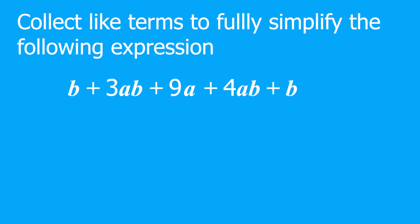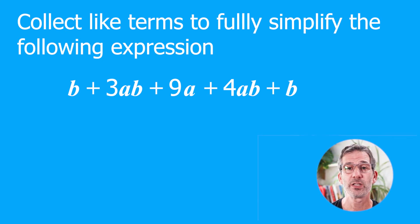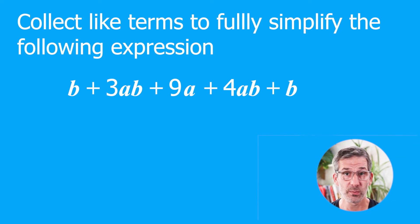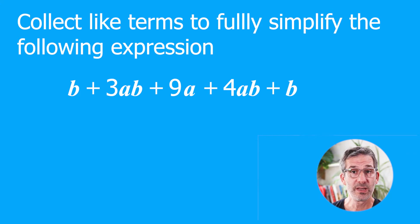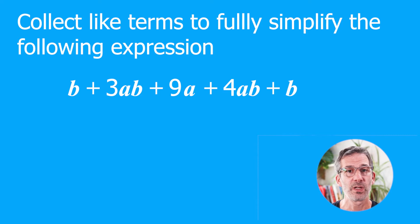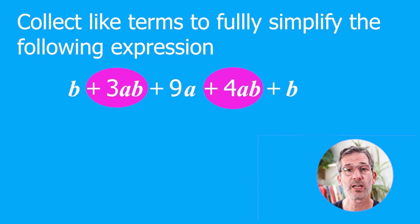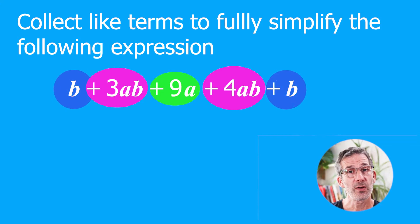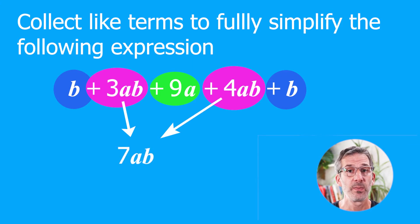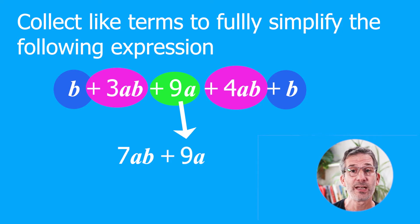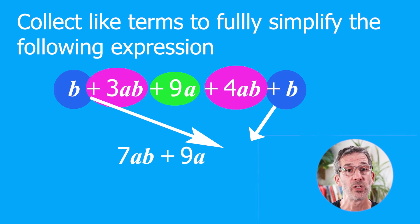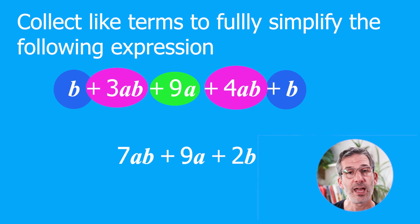Collect like terms to fully simplify B + 3AB + 9A + 4AB + B. This expression contains terms with AB (meaning A × B), terms with only A, and terms with only B. Terms with different letters are not like terms, so we keep them separate. Highlighting: 3AB + 4AB = 7AB; 9A is on its own; B + B = 2B. So the whole expression simplified is 7AB + 9A + 2B.